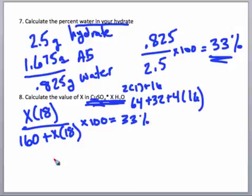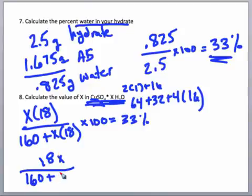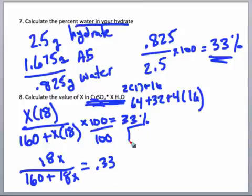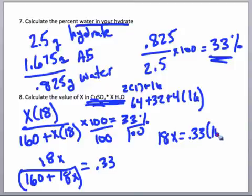To simplify this, the way I'm going to rewrite this is 18x over 160 plus 18x is equal to 0.33. What I did here was just divided both sides by hundreds to simplify our equation. We're going to take that quantity, multiply both sides by that quantity, so we would end up with 18x is equal to 0.33 times 160 plus 18x.